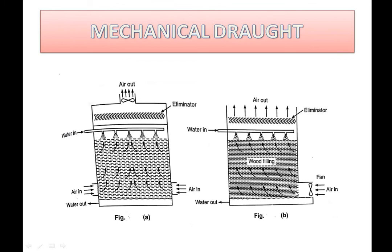In the forced type, the fan is present at the air inlet. The air passes through the wood filling and is blown out from the top of the tower, and the cold water is collected from the bottom. The key difference is the placement of the fan: at the top in the induced type and at the bottom in the forced type.